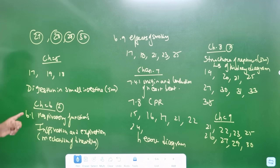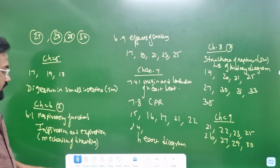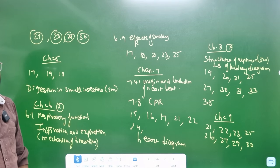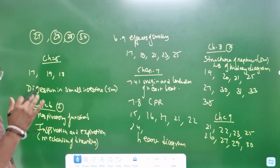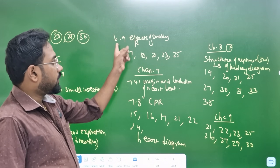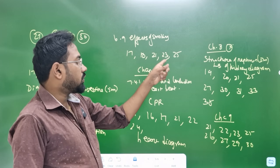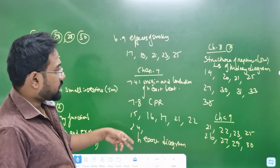Chapter 6 — respiration function. Section 6.13 marks. Inspiration, expiration — mechanism of breathing diagram. Easy — flowchart 6.9. Effects of smoking. Sections 17, 18, 21, 23, 25 — bookpack.